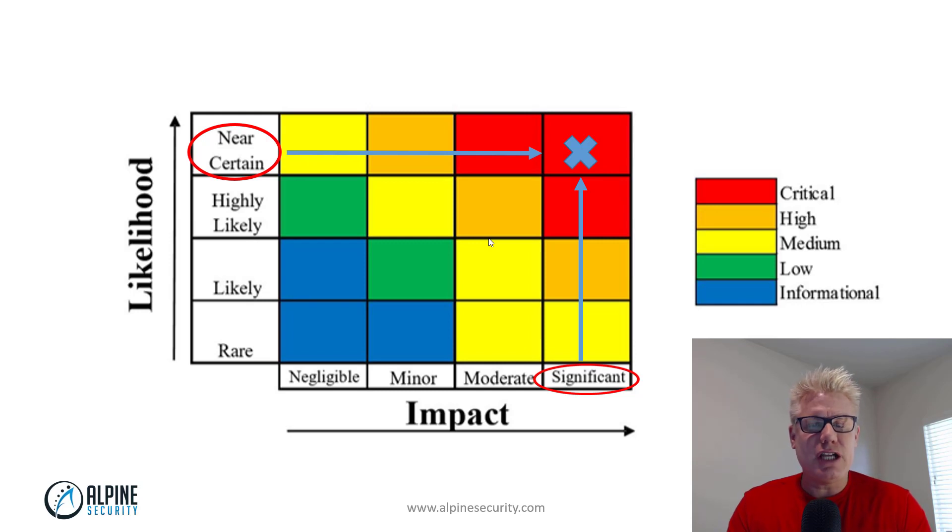The impact did not change because you still have the PHI, the PII, and the IP on that server. But because the likelihood changed from one day to the next, now the server that previously had a medium risk rating has a critical risk rating. This illustrates why it is important to continually assess risk.